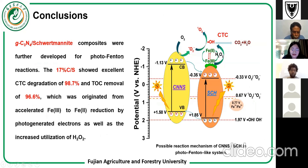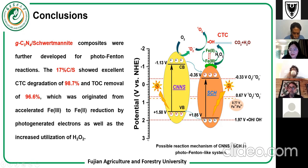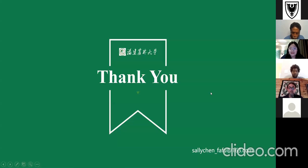To summarize, we designed a carbon nitride and Schwertmannite composite for the photo-Fenton degradation of CTC. Our system achieves approximately 97.7% CTC degradation and 96.6% TOC removal, attributed to the activated Fe(III) to Fe(II) reduction driven by photogenerated electrons, as well as increased utilization of hydrogen peroxide. The proposed reaction mechanism is shown here. We would like to thank our lab ESML and collaborator Ms. Chao Xinxing for her hard work, and my supervisor Professor Li. Thank you for your time.